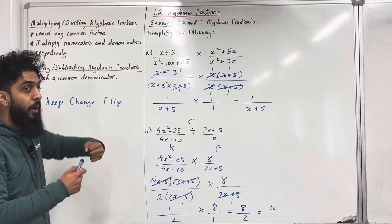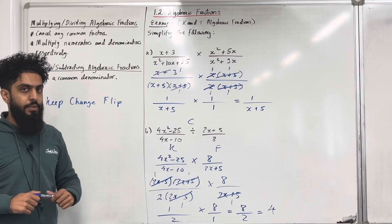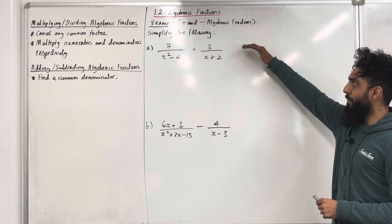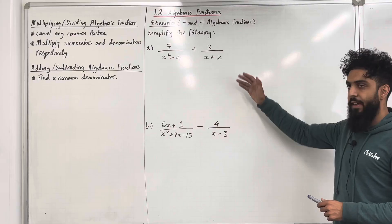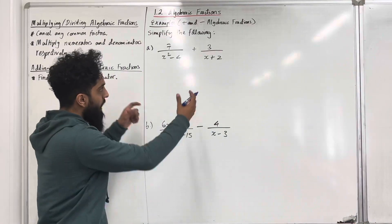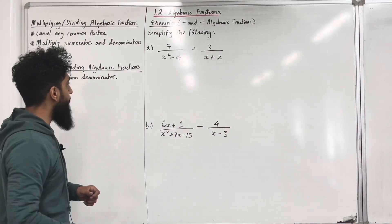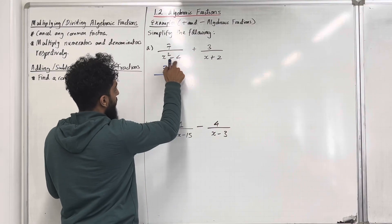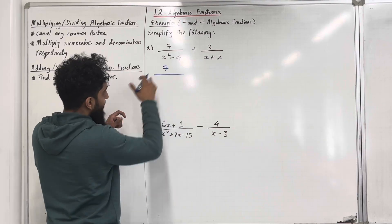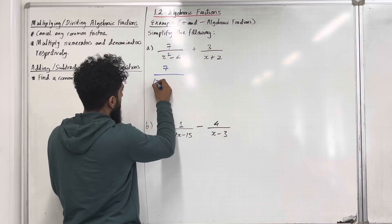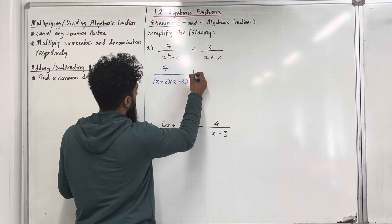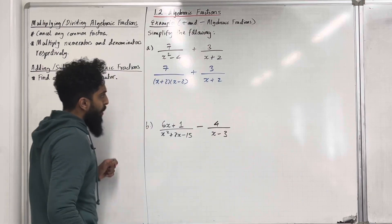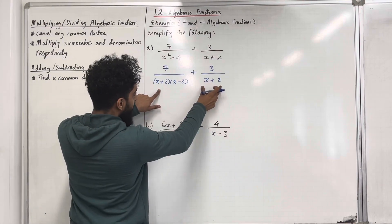Those examples cover how to multiply and divide algebraic fractions. Moving on to adding and subtracting algebraic fractions — simplify the following, part A and part B. Let's have a look at part A. Over here we are adding two fractions, and the key thing is to find a common denominator. The first fraction is 7 over x squared minus 4, which is a difference of two squares, so we can factorise this into x plus 2 times x minus 2. Plus the second fraction, which is 3 over x plus 2.